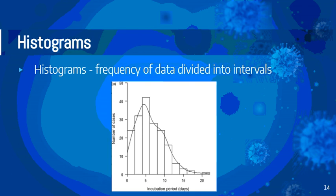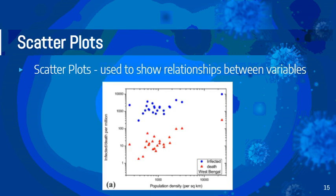A histogram shows the frequency of data divided into intervals. This histogram looks at the average incubation period — from when you've been exposed to the number of cases — and it appears that around five days after exposure is typically when you start to see a positive case. Finally, a scatter plot can be used to show a relationship between two variables, and you will need to include at least one scatter plot in your overall presentation.